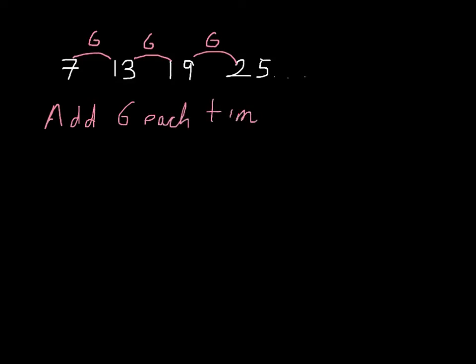So that's the first thing we could be asked. The next thing we could be asked is to continue the sequence for the next 2 or 3 terms. So clearly we just add 6: 31, add 6 again would be 37, and add 6 again would be equal to 43. So that's the next thing we could be asked.